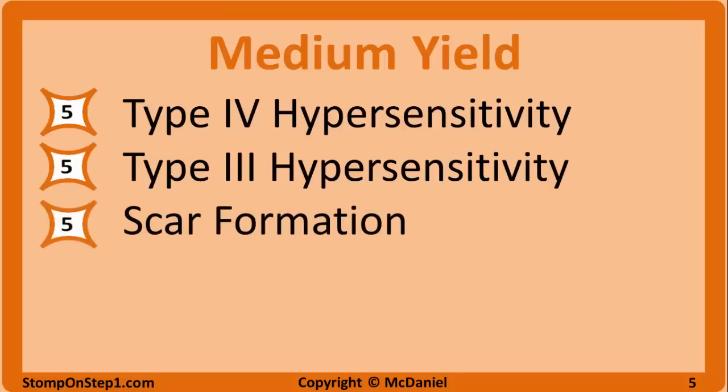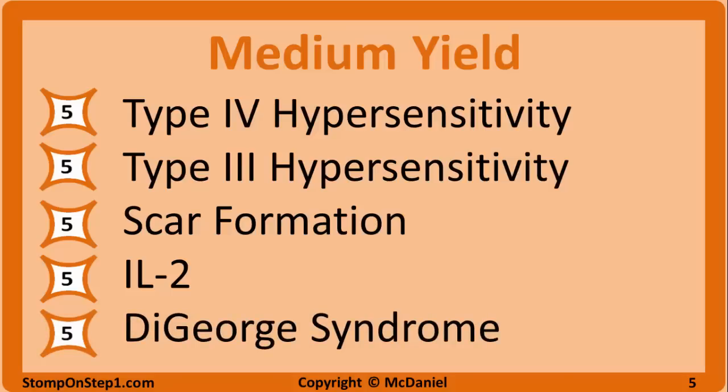Scar formation — know a little about myofibroblasts, what a keloid is, and how scars can form in the CNS through gliosis. Interleukin-2, or IL-2 — you need to know its role in the proliferation of T cells and how some immunosuppressants inhibit IL-2. DiGeorge Syndrome — know the buzzwords like 3rd and 4th pharyngeal pouches, absence of the thymus and resulting absence of T cells, absence of the parathyroid and the resulting hypocalcemia, and associations such as truncus arteriosus and facial abnormalities.